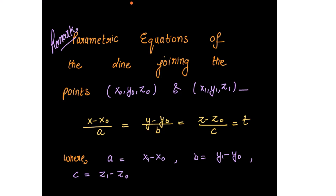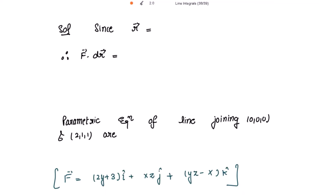There is a remark written here. The parametric equations of the line joining points (x₀, y₀, z₀) and (x₁, y₁, z₁) are: (x − x₀)/a = (y − y₀)/b = (z − z₀)/c = t, where a = x₁ − x₀, b = y₁ − y₀, and c = z₁ − z₀. Taking r vector as x·i-cap + y·j-cap + z·k-cap.